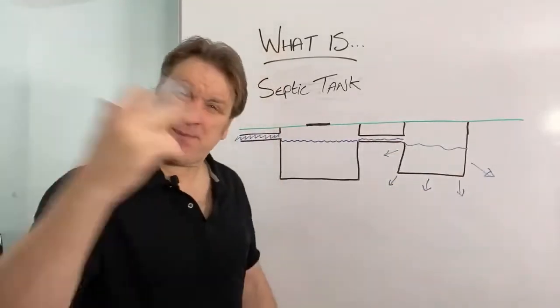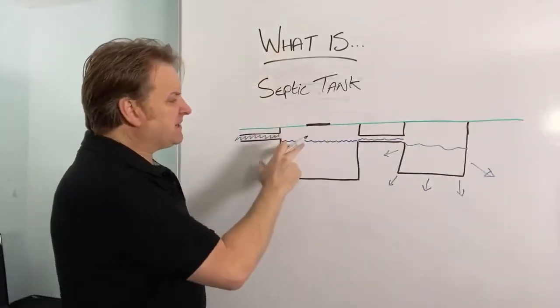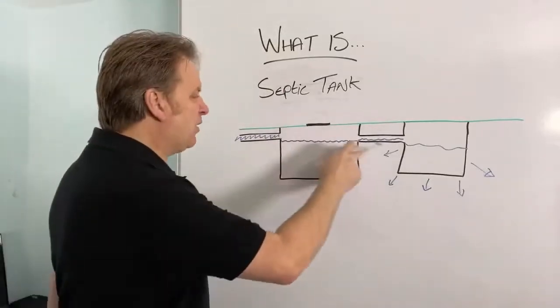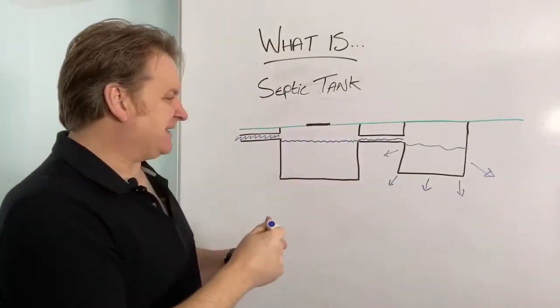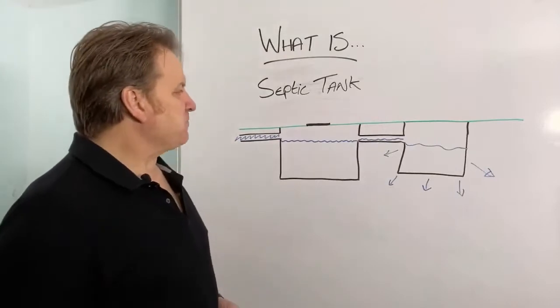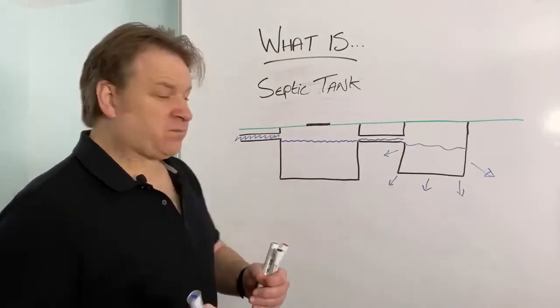So a soak away is just basically a hole in the ground or some kind of product in which the liquid from the septic tank can go into and then it'll just soak away into the soil. So that's what a soak away is. But just coming back to the septic tank for a moment. So the septic tank is different than a cesspool because it's got an outlet as well as an inlet.